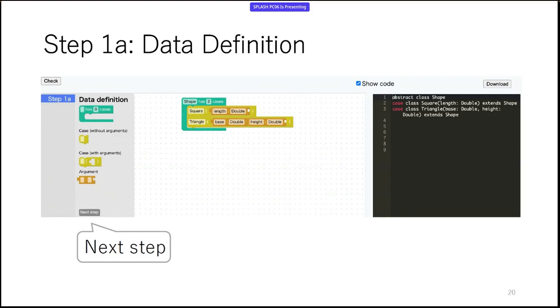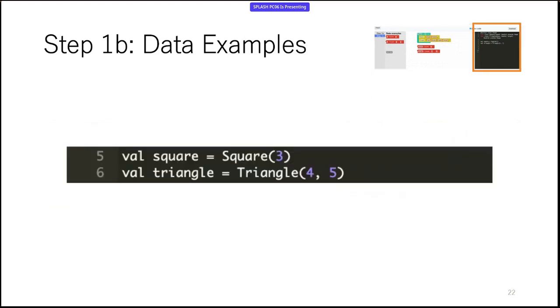Having defined the data type, we click on the next button to proceed to data examples. Here we create two data examples, one for square and the other for triangle. The example blocks in the block panel are automatically generated by MEO according to the data definition from the previous step. In the editor, we see the Scala representation of the data examples, which is just two val statements. This is simpler than the data definition, but the blocks are also useful in this case. In particular, they prevent ill-formed data examples that lack constructor arguments.